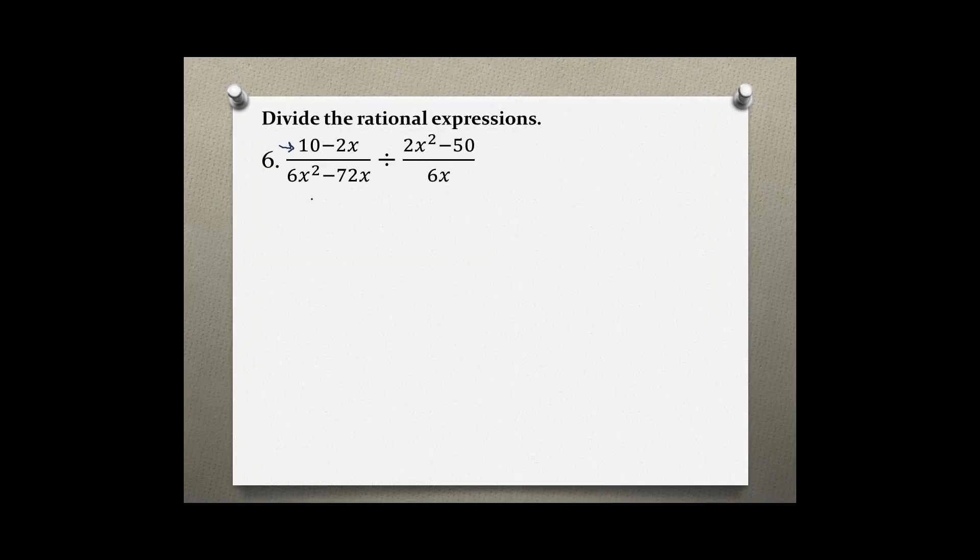10 minus 2x, both of them share a common factor of 2. So I can pull out a 2 and I am left with 5 minus x. Okay, done factoring the first part, now factoring the second part.